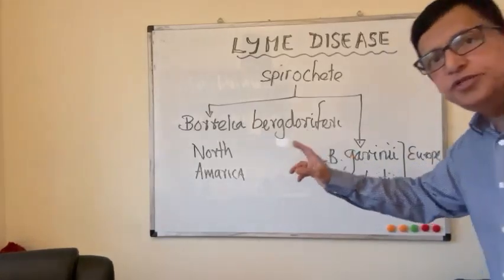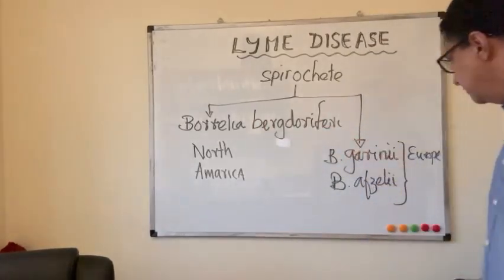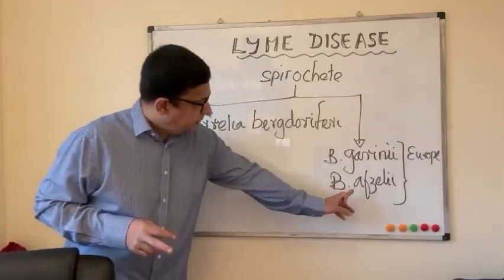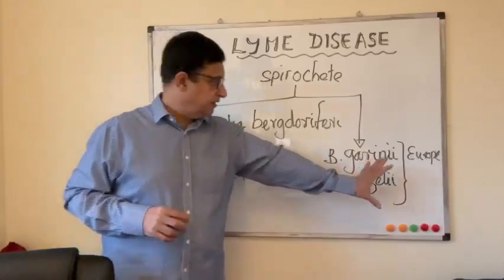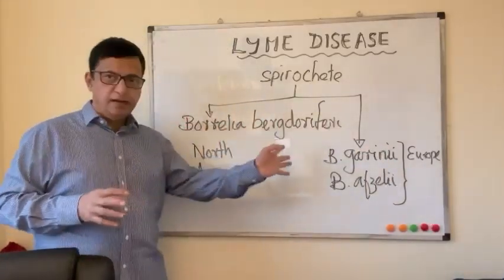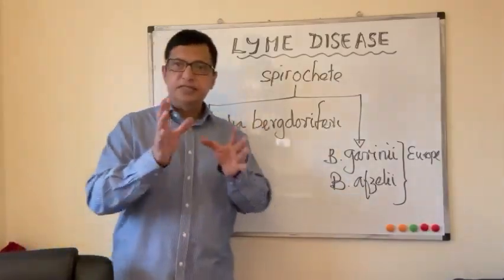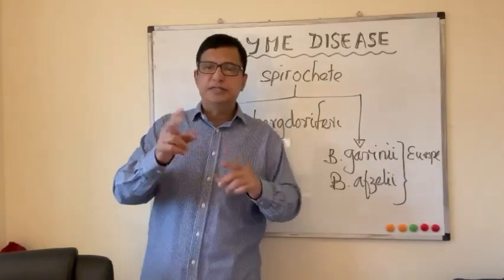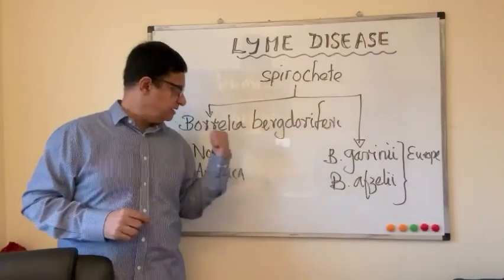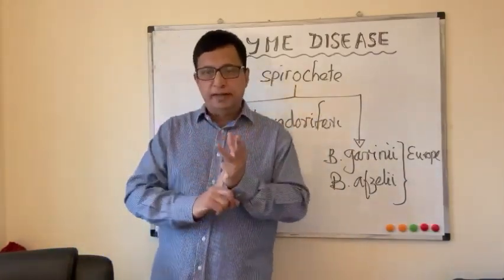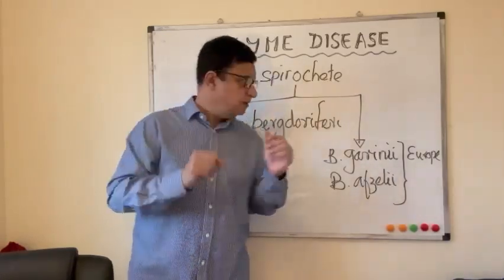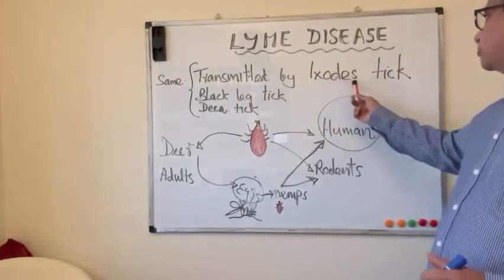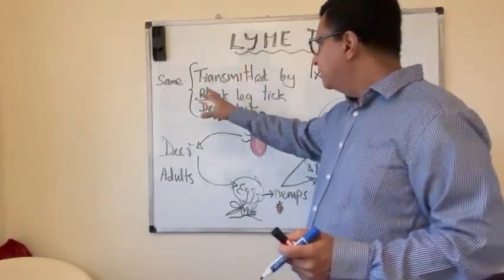In North America the causative agent is Borrelia burgdorferi. In Europe there are two causative agents: Borrelia garinii and Borrelia afzelii. There are about 10 species of Borrelia, but these three species are prominently causing disease in human beings. Borrelia is a spirochete — there are three spirochetes which cause major diseases in humans: Borrelia, Leptospira, and the one causing syphilis.